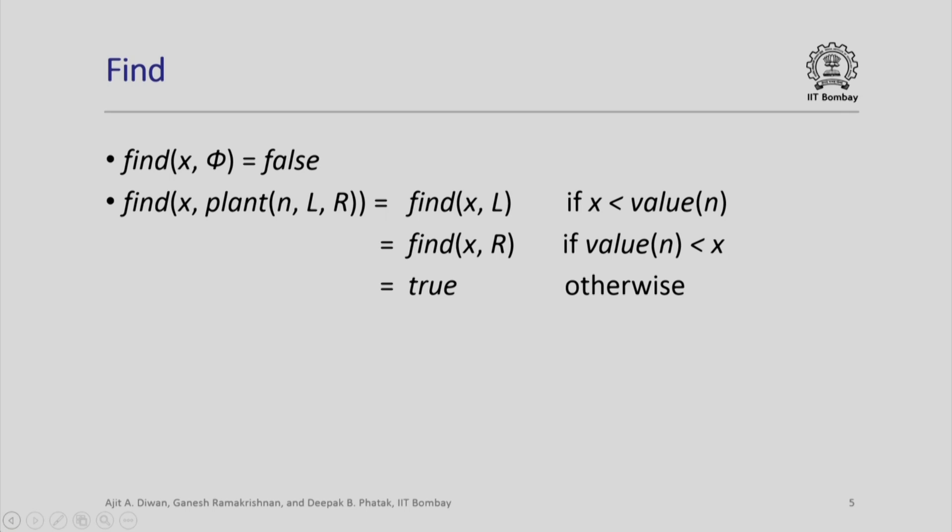For find(x, plant(n, l, r)): if our binary search tree has root node n with left subtree l and right subtree r, we look at value(n). If x is less than value(n), then if x is present in the set it must be in some node in the left subtree, because all values in the left subtree are less than value(n) and all values in the right subtree are greater. So we call find(x, l) to search the left subtree.